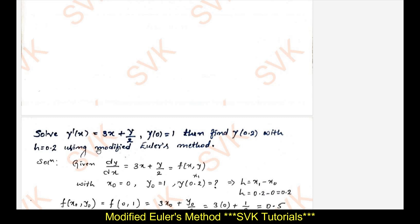First write down all the given data. dy/dx equals 3x plus y/2, which we name f(x, y). From the initial condition y(0) equal to 1, we identify x₀ equal to 0 and y₀ equal to 1. We need to find y(0.2). We can verify the step size: h equals x₁ minus x₀, which is 0.2 minus 0, giving h equal to 0.2.